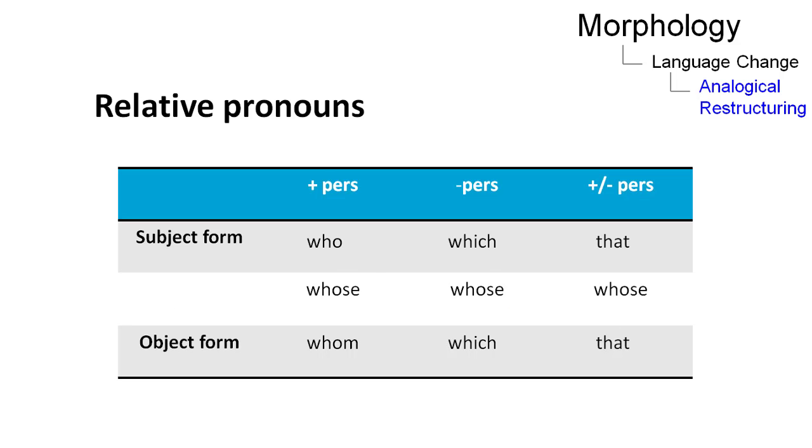Instances of analogical restructuring can also be found in the present-day English system of relative pronouns. Here we have two paradigms. In two of them, we have identity between the object and the subject form.